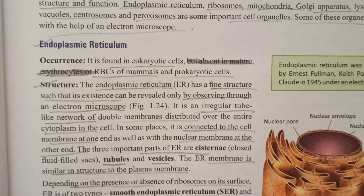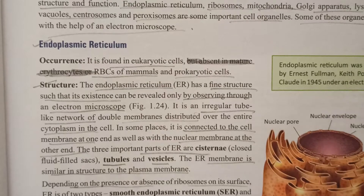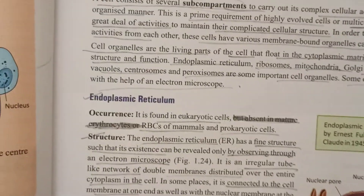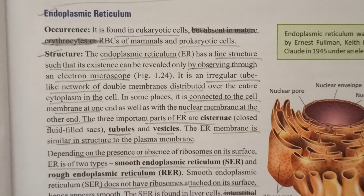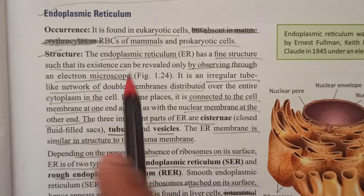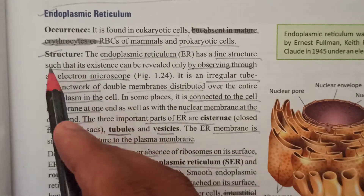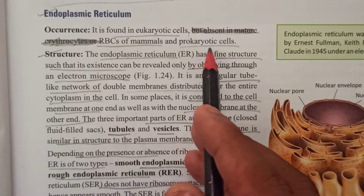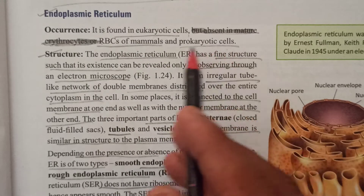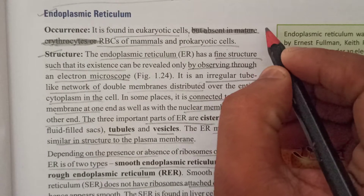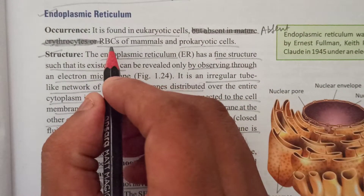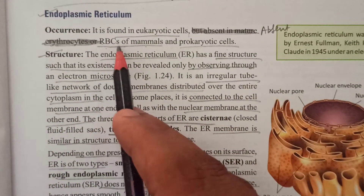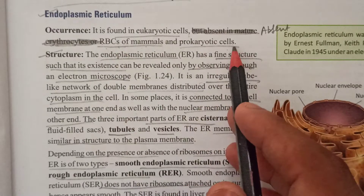First question: what did you get in eukaryotic cells? In eukaryotic cells, the endoplasmic reticulum is present. However, it is absent in prokaryotic cells and in the red blood cells of mammals.